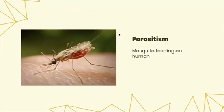In parasitism, you can see a mosquito feeding on a human. This only benefits the mosquito while it harms the human.